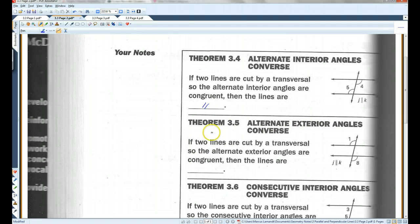Alternate exterior angles converse. If two lines are cut by a transversal, so the alternate exterior angles are congruent, then the lines are also parallel.